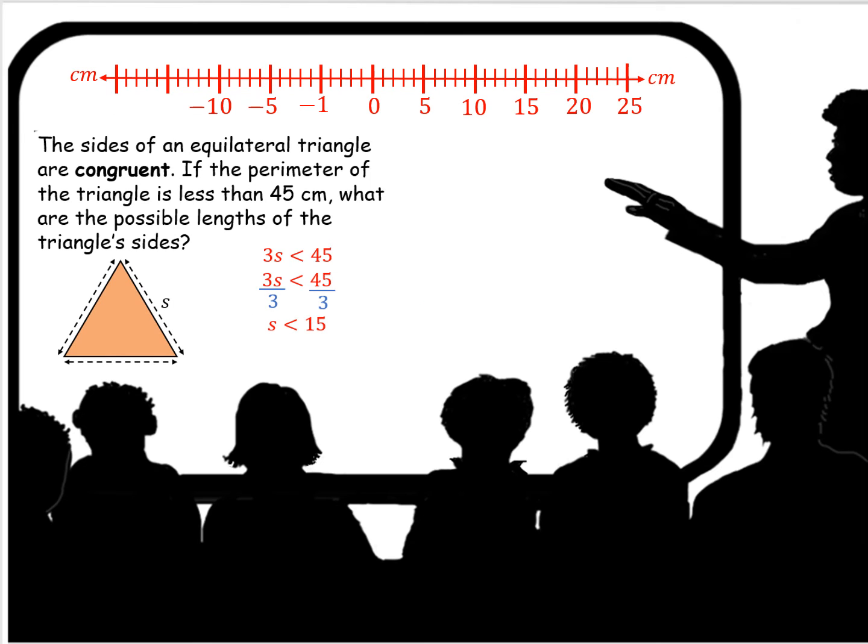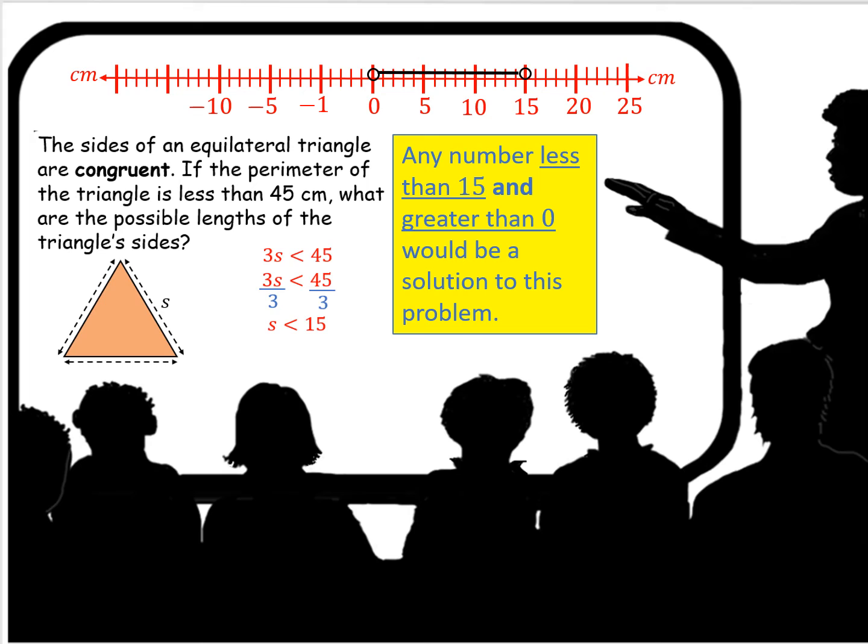When we interpret our solution, what we can look at is it has to be less than 15, but obviously a side has to have length. So it has to be greater than 0. So if you look at the number line graph, you'll see an open circle on 0, which means it can't be 0.